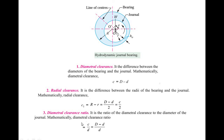The next term is diametral clearance ratio. It is the ratio of diametral clearance to the diameter of the journal. Mathematically, it is given by small c divided by small d, where d is the diameter of the journal. Since c equals capital D minus small d, the diametral clearance ratio is equal to (capital D minus small d) upon small d.